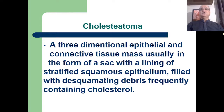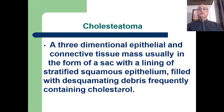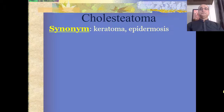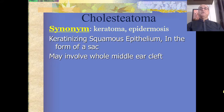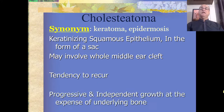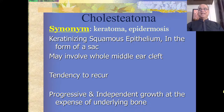Cholesteatoma is a three-dimensional epithelial and connective tissue mass in the form of a sac, with a lining of stratified squamous epithelium filled with desquamated debris frequently containing cholesterol. It is also called keratoma or epidermosis. It is keratinizing squamous epithelium in sac form that may involve the whole middle ear cleft, with a tendency to recur and progressive independent growth at the expense of underlying bone.